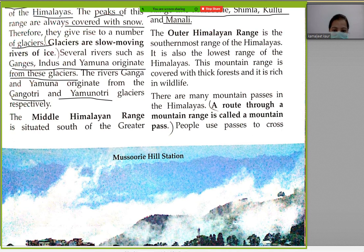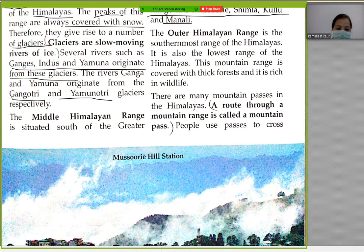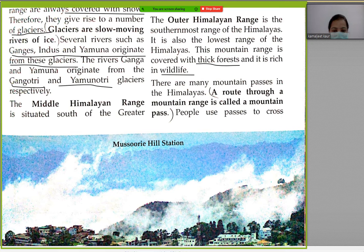The Outer Himalayan range is the southernmost range of the Himalayas and also the lowest range. This mountain range is covered with thick forest and is rich in wildlife. There are many mountain passes in the Himalayas — a route through a mountain range is called a mountain pass.